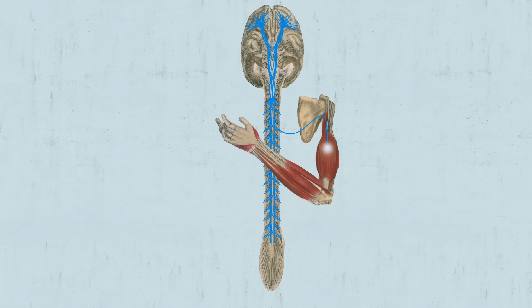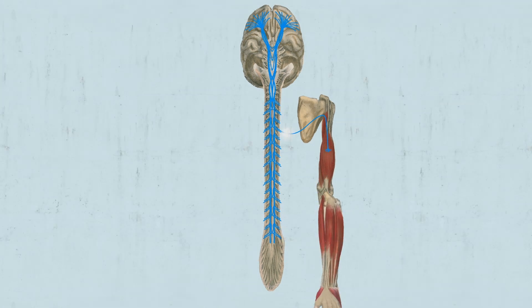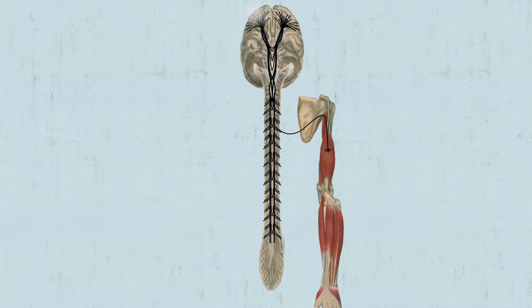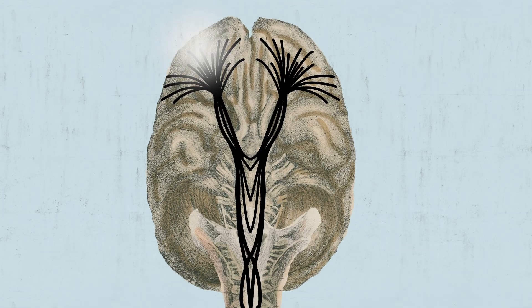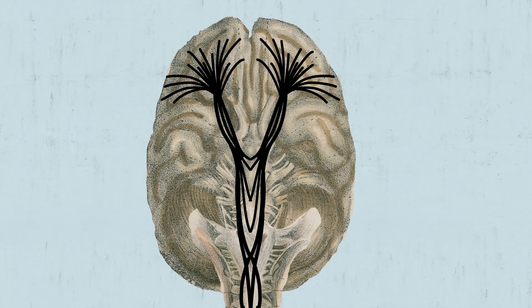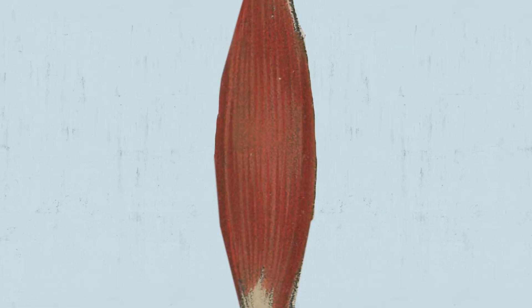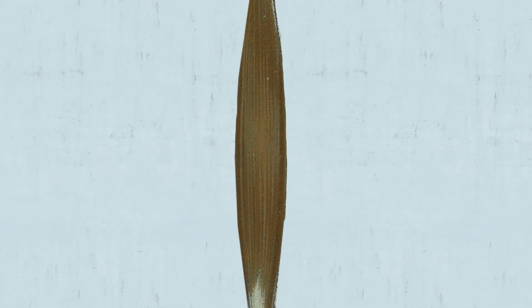Every voluntary move we make occurs because of messages transmitted along this pathway. But when motor neurons degenerate in ALS, their ability to transfer messages is disrupted, and that vital signaling system is thrown into chaos. Without their regular cues, the muscles waste away.